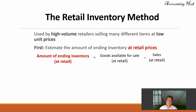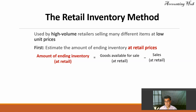What do we do first? We estimate the amount of ending inventory at retail prices. Goods available for sale at retail prices, less sales at retail prices. Ending inventory is beginning inventory plus purchases — that is goods available for sale — less sales. This is the approach of our cost of goods sold formula applied at retail prices.